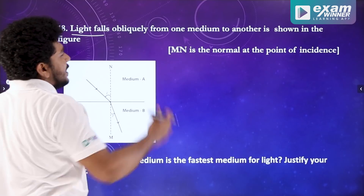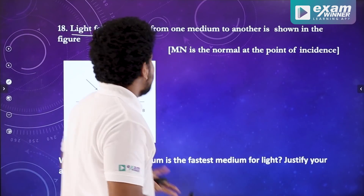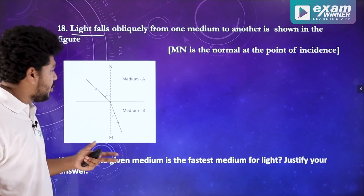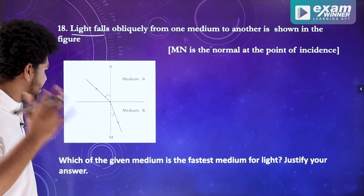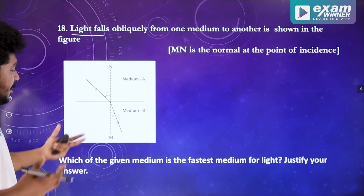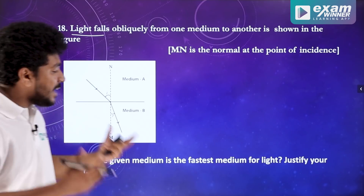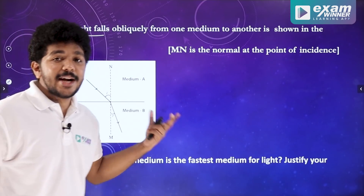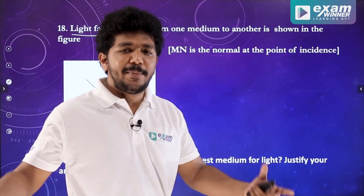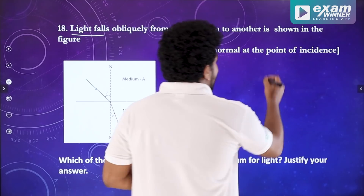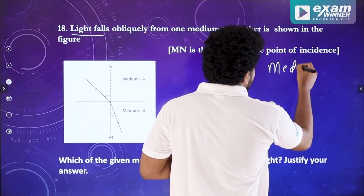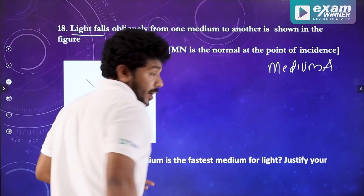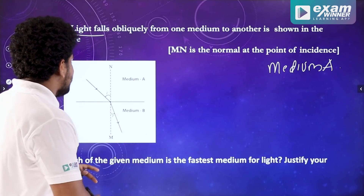Light falls obliquely from one medium to another as shown in the figure. Medium A and medium B. Which of the given medium is the fastest medium for light? Justify your answer. A is the fastest. Medium A is the answer. Justify how it is — one way to justify it.